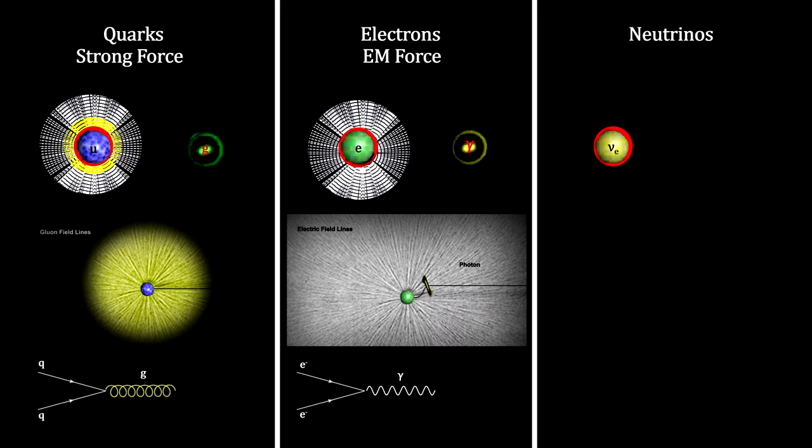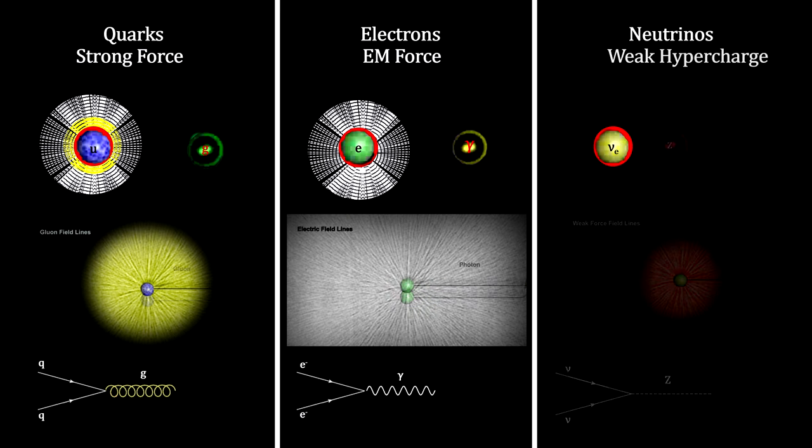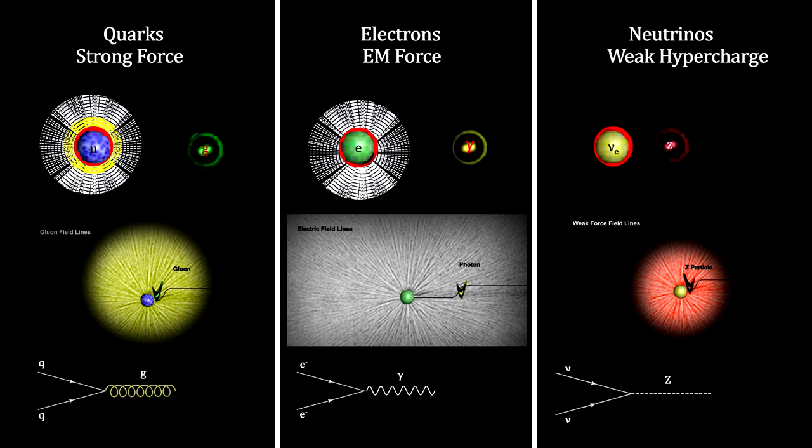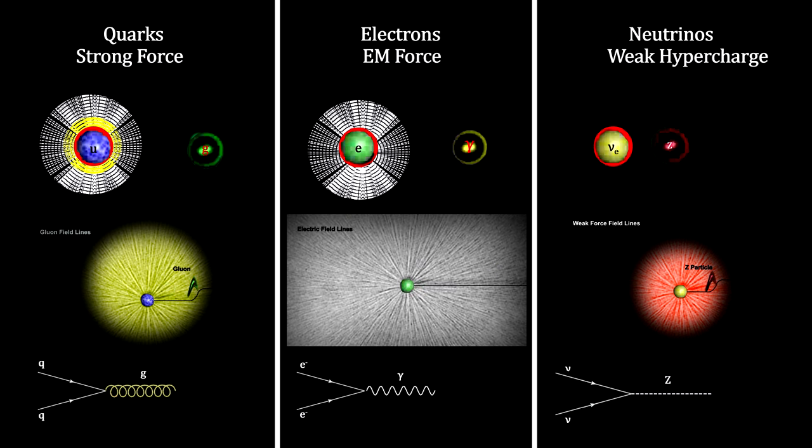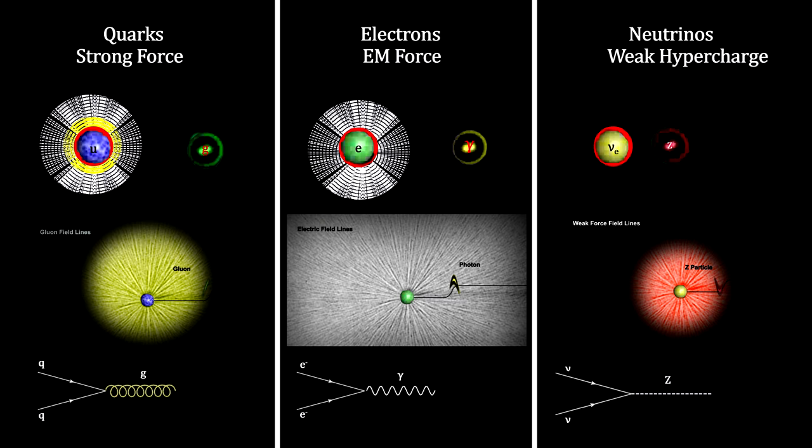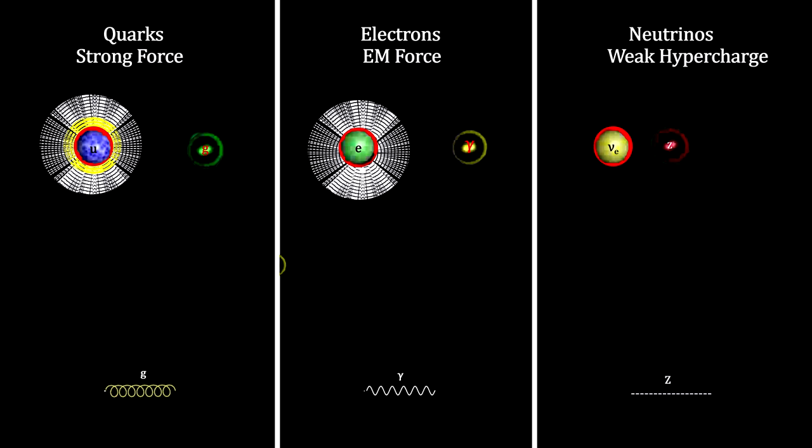Like accelerating electrons and quarks create vibrating ripples in their respective force fields called photons and gluons, accelerating electrons, quarks, and neutrinos can create vibrating ripples in the weak hypercharge field called z-particles. And where photons can accelerate electrons and gluons can accelerate quarks, z-particles can accelerate neutrinos and electrons and quarks, because they all carry the weak charge.